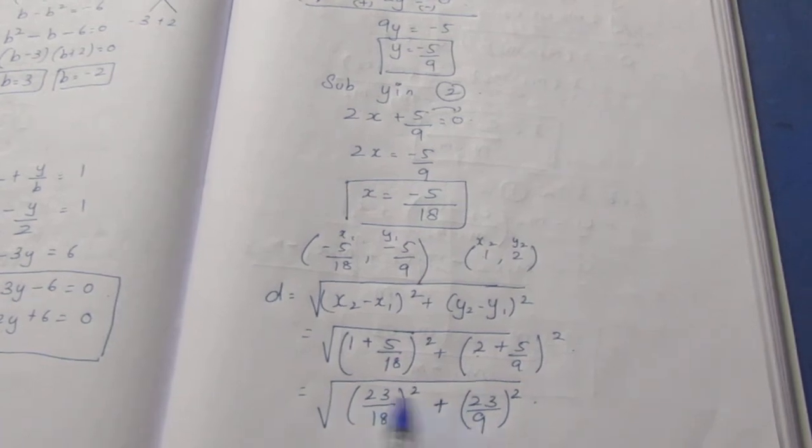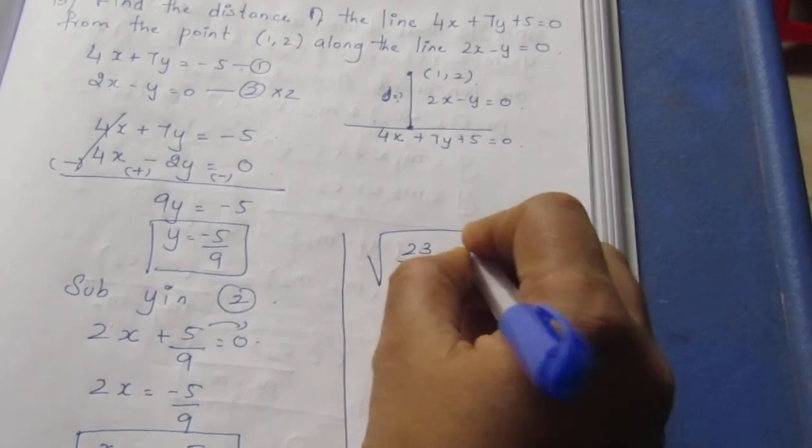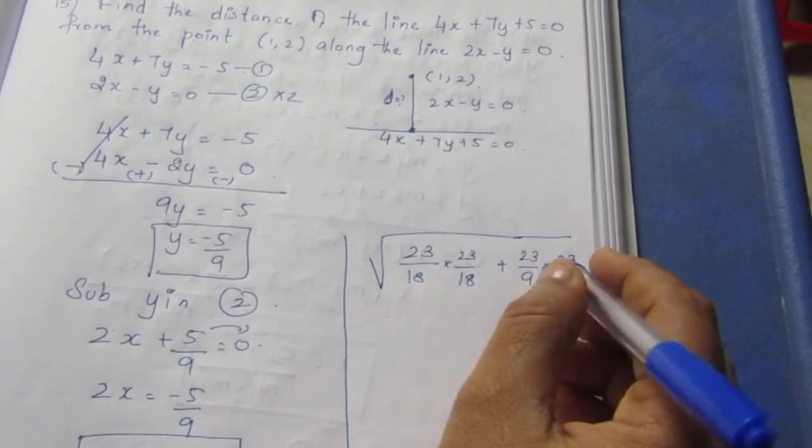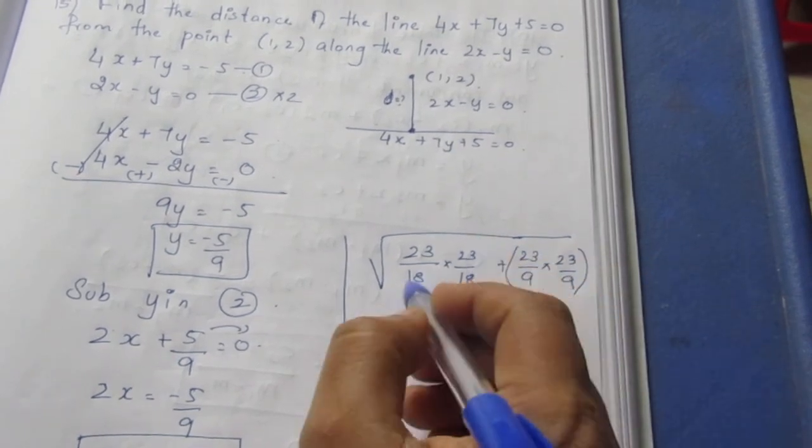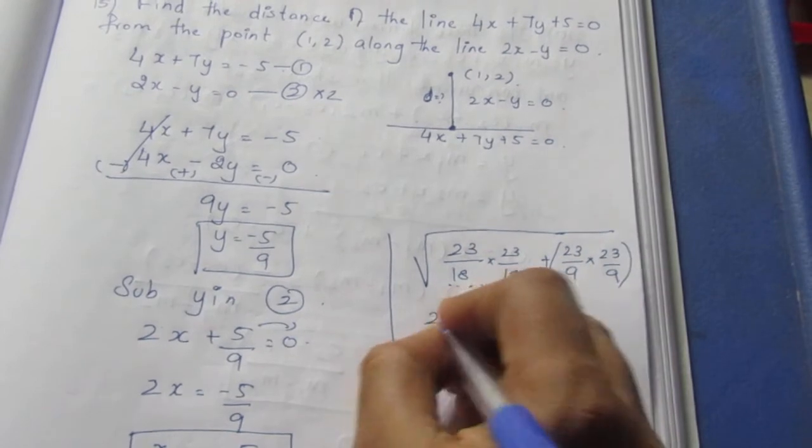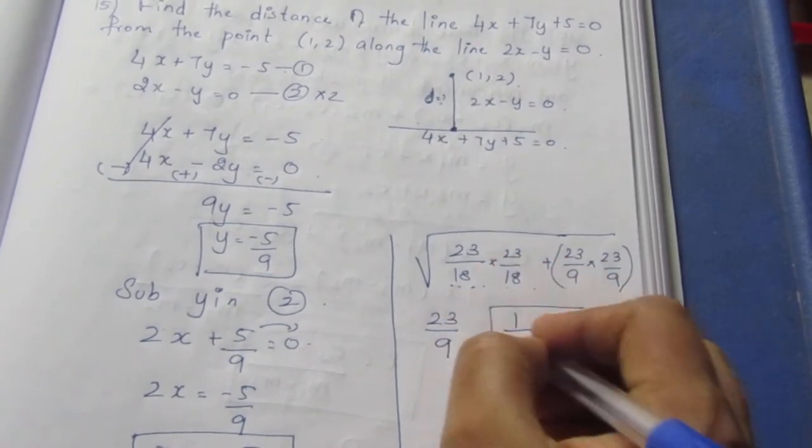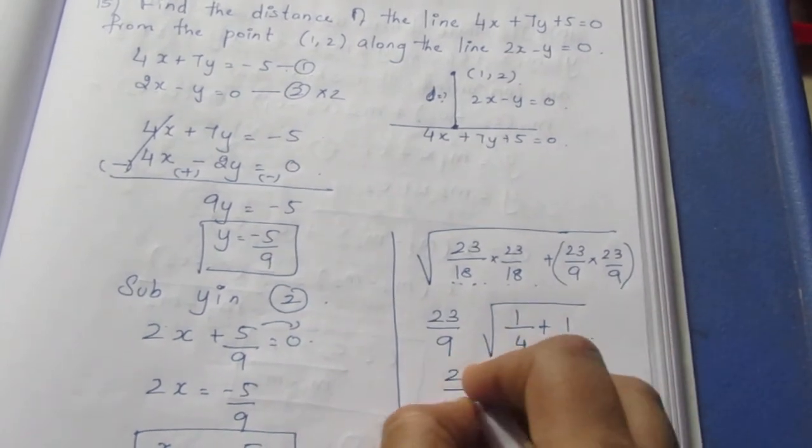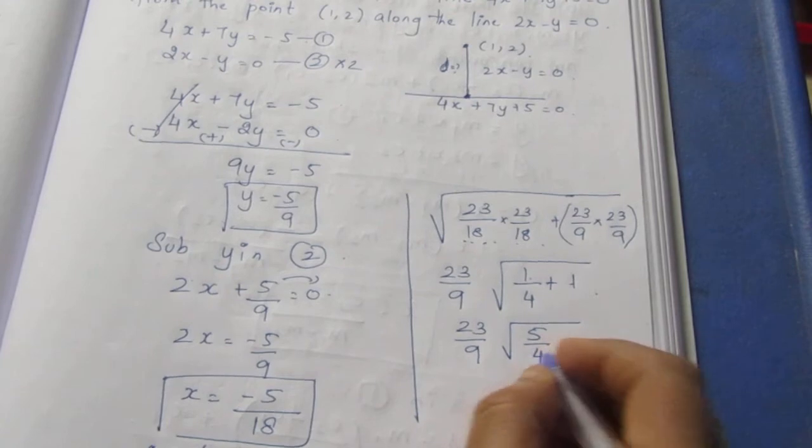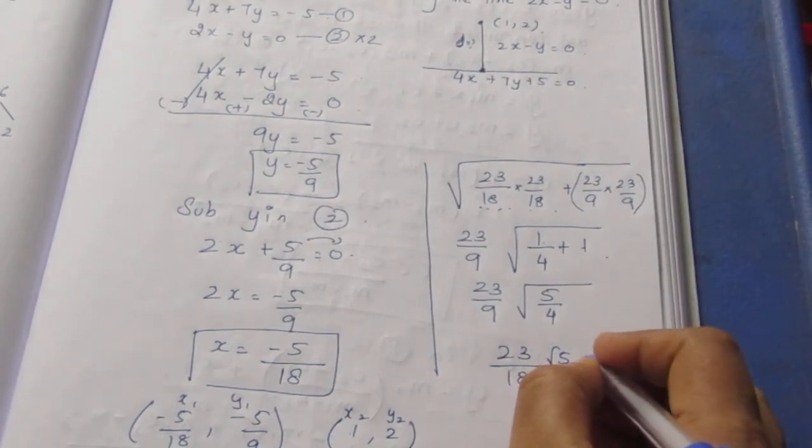Now taking 23 by 9 which is common both terms, easily we can solve this. Taking we have 23 by 18 into 23 by 18 plus same way here 23 by 9 into 23 by 9. So we can take common outside as we can write the 18 to be 2 into 9. Here also 2 into 9. Taking 23 by 9 whole square outside we get 23 by 9 because in root 1 will come off. Here it becomes 1 by 4. 2 into 2 will become 4 plus 1. Now taking LCM, 23 by 9 here it becomes 4 plus 1, 5 by 4. Here root 5 we can't take it outside but 4 it comes as 2. So your final answer will be 23 by 9, 2s are 18, root 5 units.